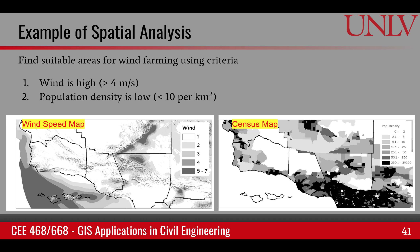Let's look at an example to wrap up spatial analysis of overlaying. Suppose we have a wind speed map and a census map, and we want to find locations suitable for wind farming. Two conditions apply: we can only place wind farms where winds are high speed — greater than 4 meters per second — and where population density is low — less than 10 people per square kilometer. Before continuing, take a moment to think about which tools and spatial analysis techniques from this module you would apply.